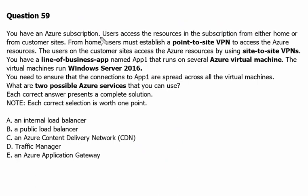You have an Azure subscription. Users access the resources in the subscription from either home or from customer sites. From home, users must establish a point-to-site VPN to access the Azure resources. The users on the customer sites access the Azure resources by using site-to-site VPNs. You have a line of business app named App 1 that runs on several Azure virtual machines running Windows Server 2016. You need to ensure that the connections to App 1 are spread across all the virtual machines. What are two possible Azure services that you can use?